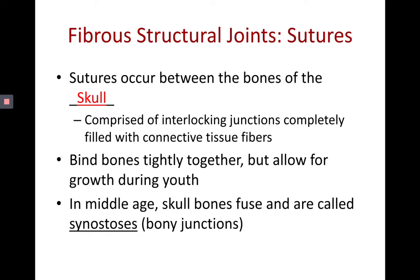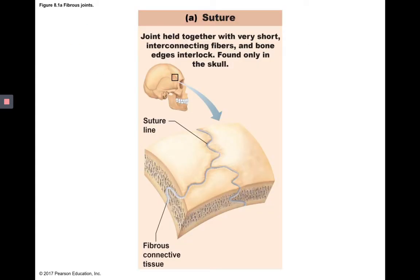Sutures allow for a little bit of growth during youth — that's why we have them, so there's growth allowed for the cranium. Then in middle age, once the cranium has stopped growing, the skull bones completely fuse and are no longer sutures. Instead, what's between the skull bones are synostoses, or bone junctions. A suture is a fibrous joint structurally, and functionally it's usually immovable, or synarthrotic.